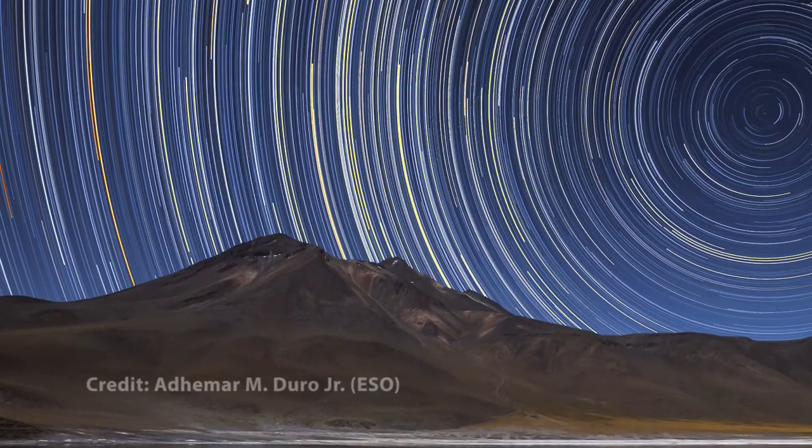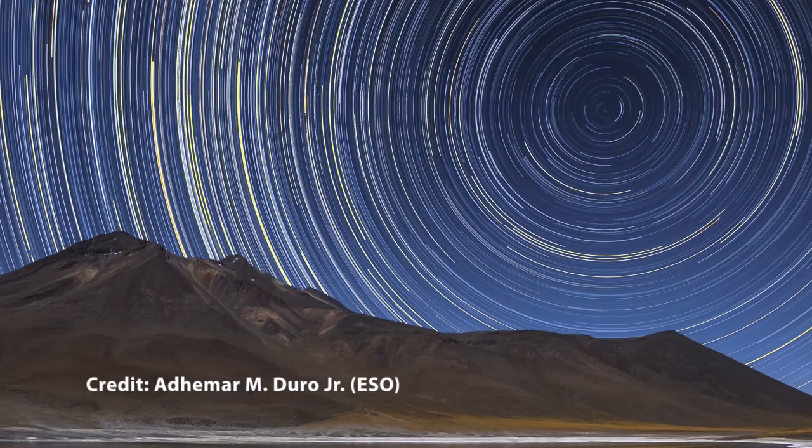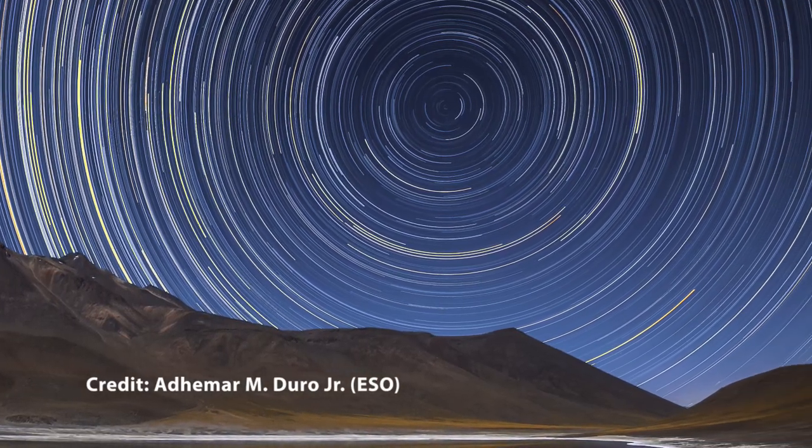That said, objects that are almost circumpolar for you can generally be viewed at some point during the night. This is because they're only below the horizon for a few hours or so. You can see this if you point your camera to the north and take a long exposure photograph for 10, 20, or 30 minutes. You can see those star trails rising from the horizon. Those are obviously stars that were below the horizon when you started taking the photo.